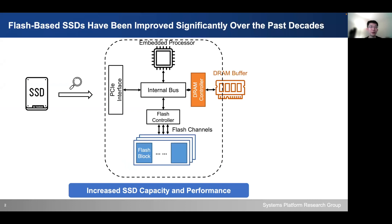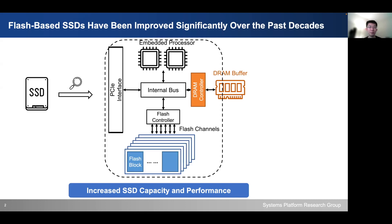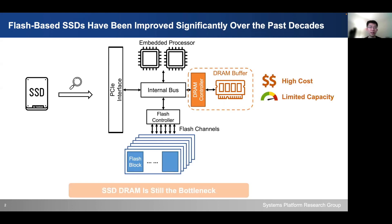Flash-based SSDs have been improved significantly over the past decades, especially for their increased capacity and performance. For example, PCIe bandwidth, the embedded processors, and flash chips have all been improved. However, SSD DRAM buffer is still the major bottleneck due to its high cost and limited capacity.